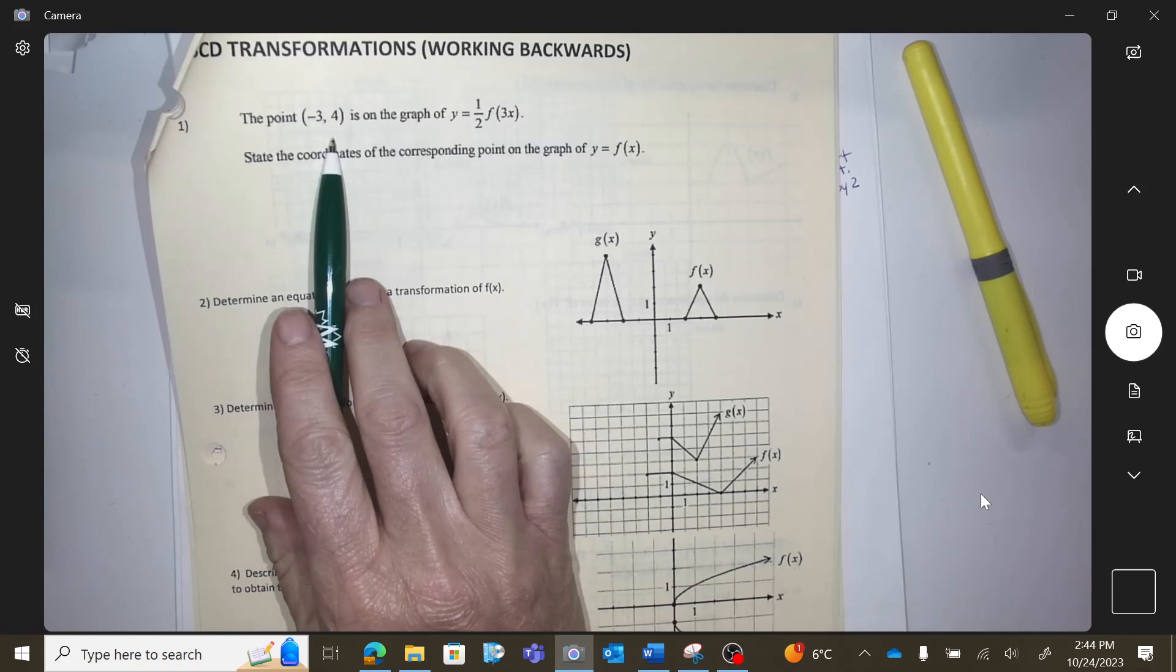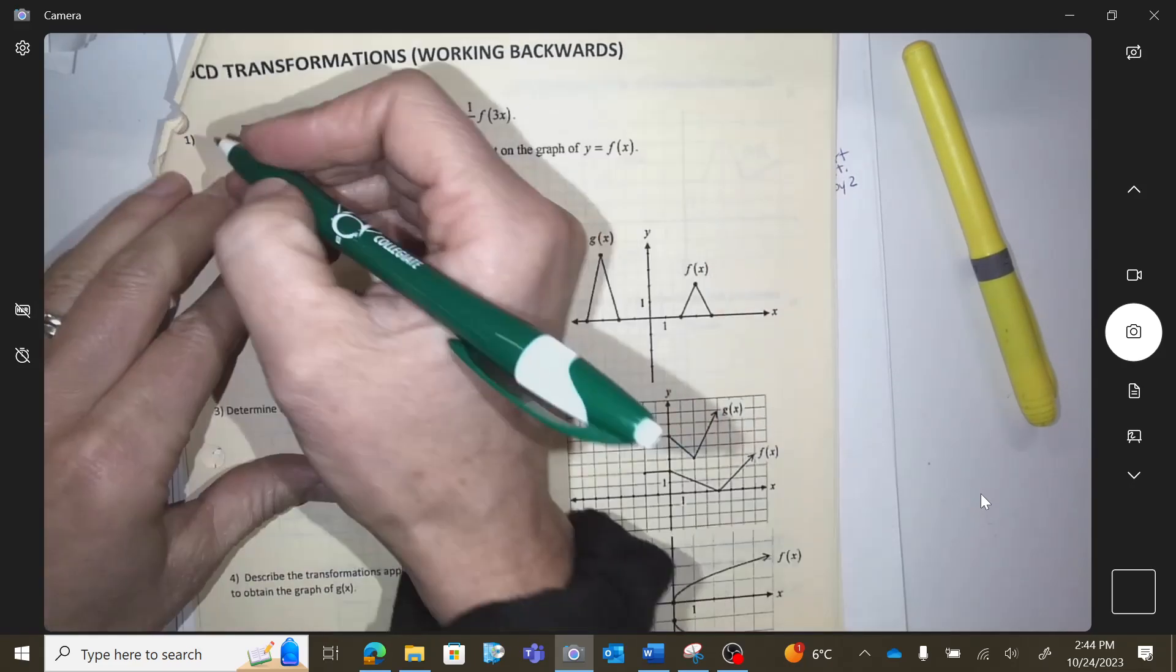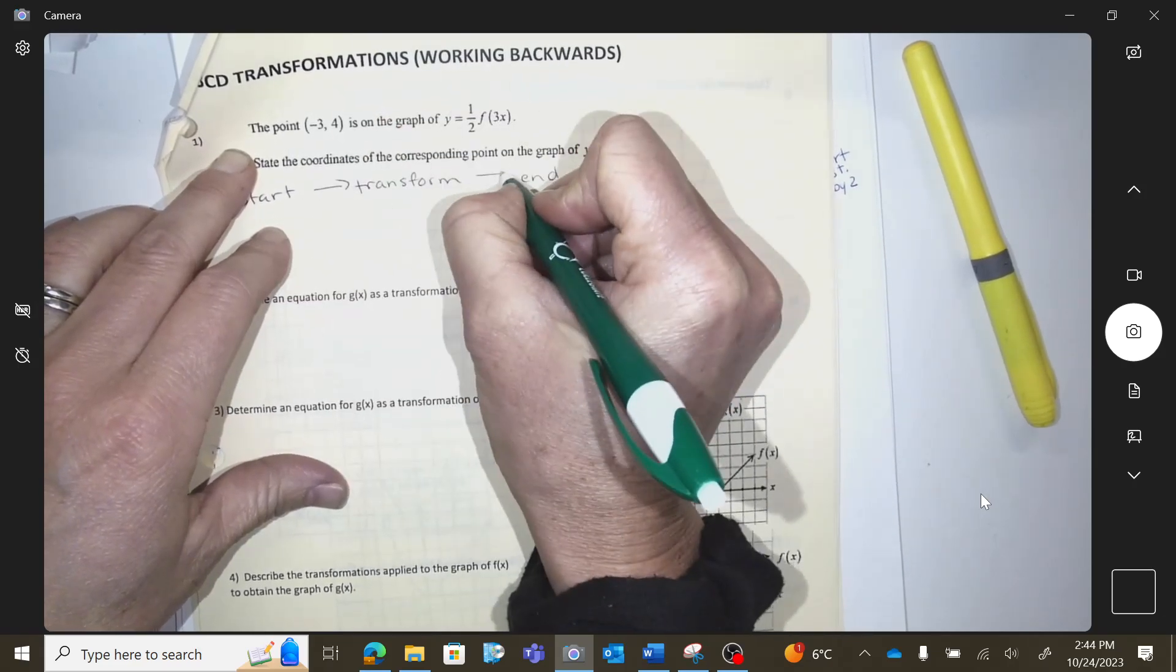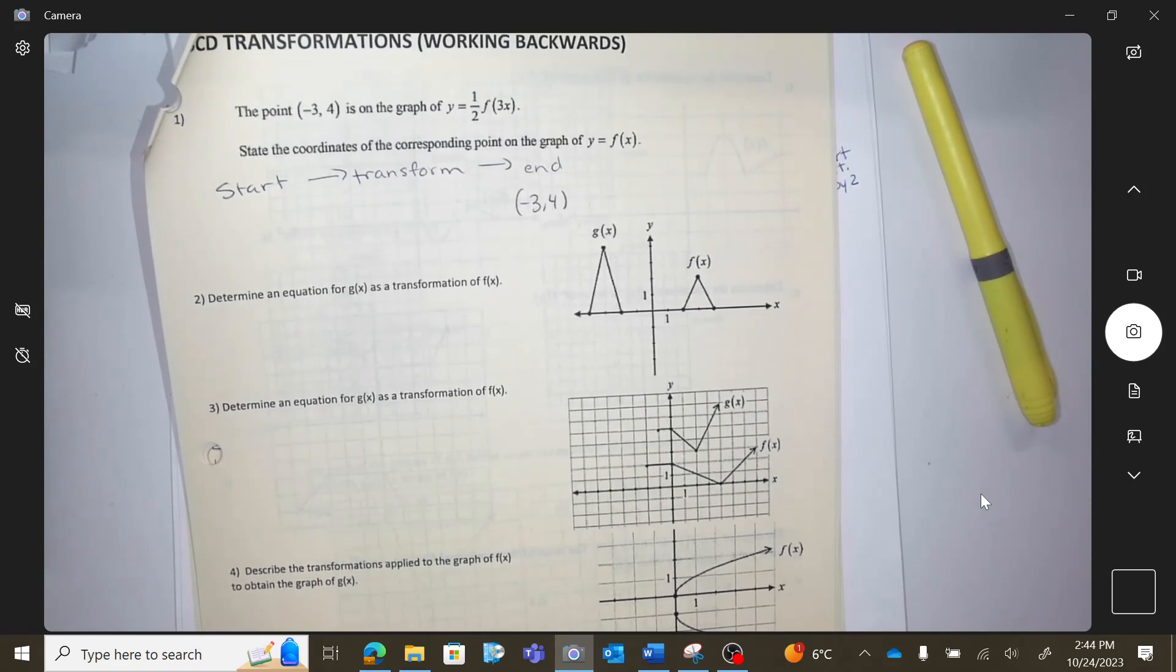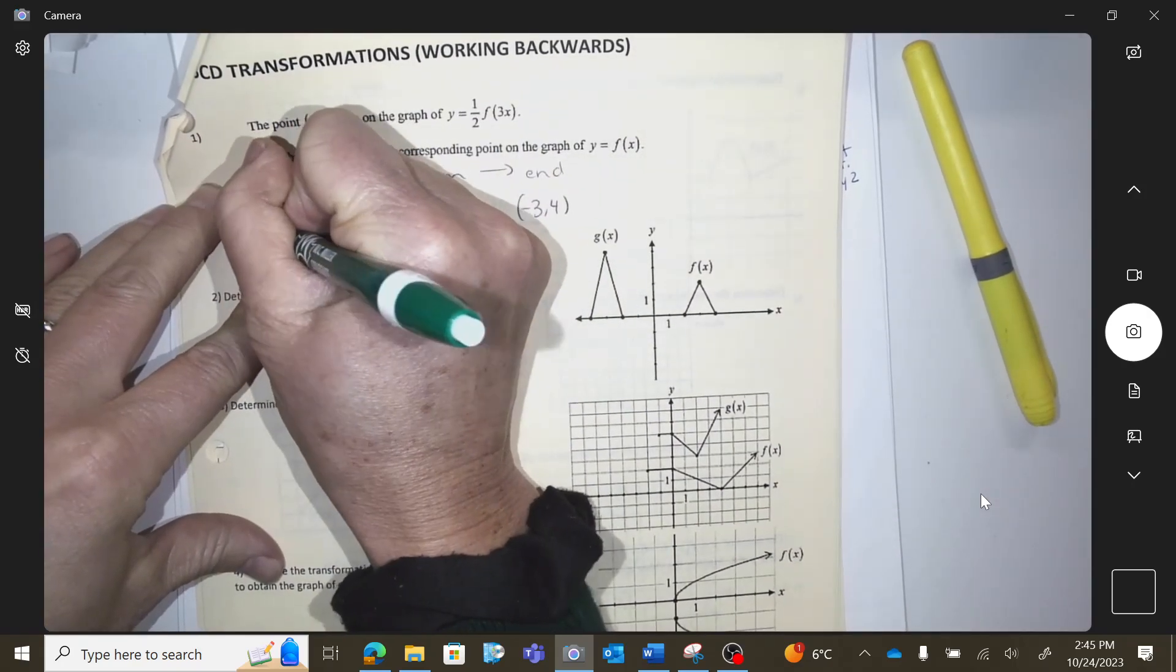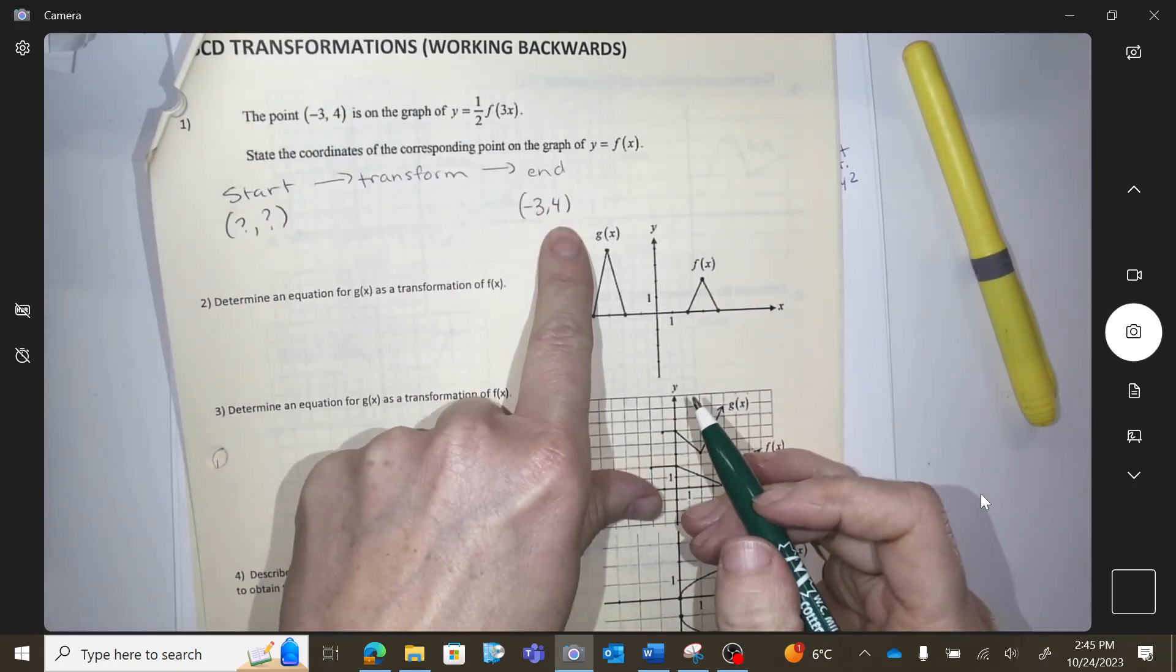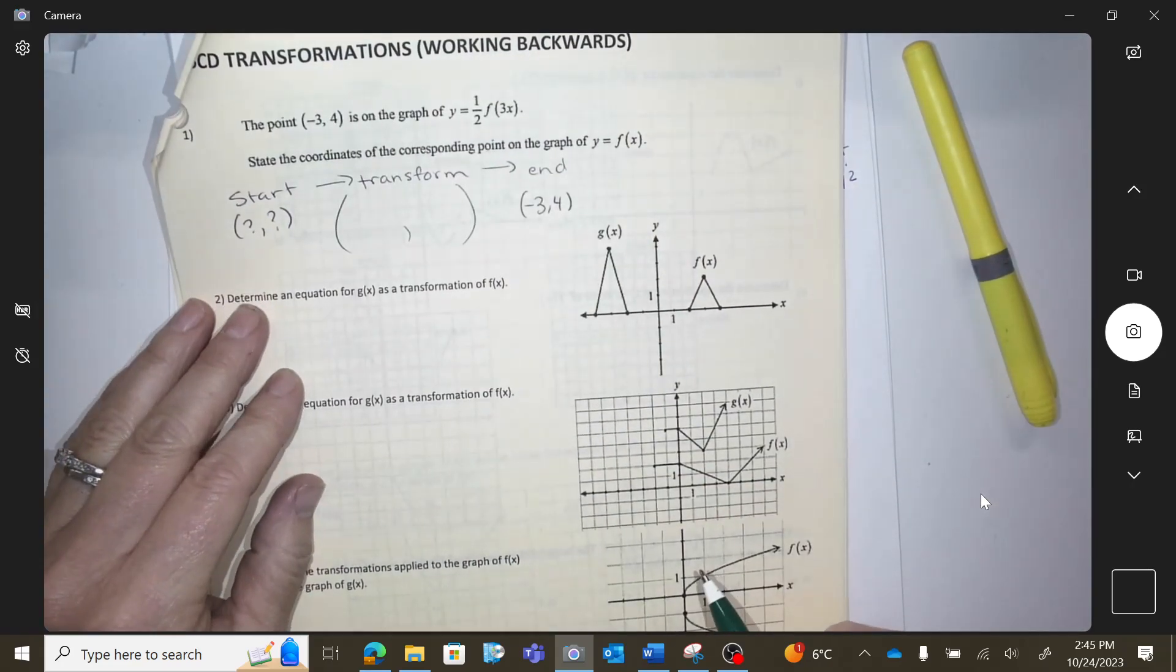Okay, so this says the point negative three comma four is on the graph of this. So it's on the transformed graph. So we start, we transform, and then that's how we end, right? We start with something, we transform it, and then we end. So negative three comma four is on the transformed graph. So what is this question saying? It's saying state the coordinate on the start, on the original. Does that make sense with the words in that question? When people read it, they don't understand at this point it's at the end and we're working back. Could you write me the math coordinate that happened?